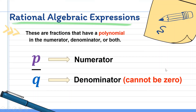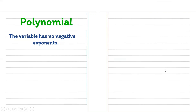What do we mean by polynomial? The numerator and denominator should be polynomial. Let's have a quick review. We have four conditions so that we can say that the given expression is a polynomial. First, the variable has no negative exponent. For example, 4x squared — the exponent is 2, and 2 is positive, therefore 4x squared is a polynomial. However, 4x raised to negative 2 is not a polynomial because it has a negative exponent.